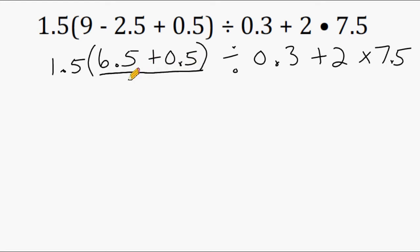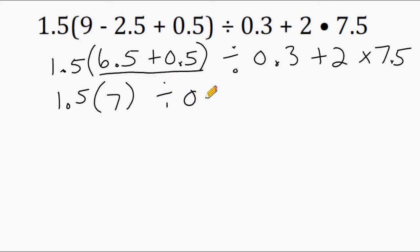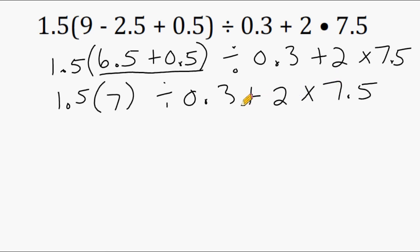We still have something left in parentheses, which is 6.5 plus 0.5, and that is equal to 7. And we're going to multiply 7 by 1.5. We always bring down what we didn't touch from the previous step. Now all we have remaining are addition, division, and multiplication signs. Remember, when you have a number right on the outside of parentheses, that is also multiplication. So the first thing we have to do is multiply 1.5 times 7.